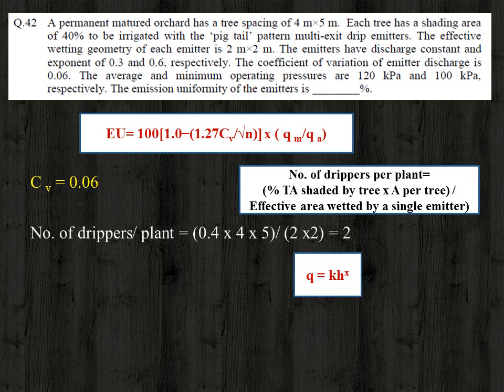We have the minimum and average operating pressures, but we need to find the minimum and average discharge. We use the equation q = k × h raised to x, where q is the discharge, h is the operating pressure, and k and x are constants given as 0.3 and 0.6 respectively.